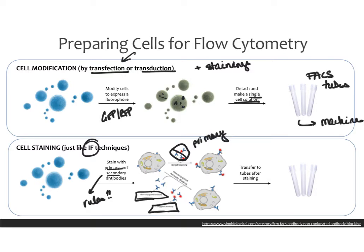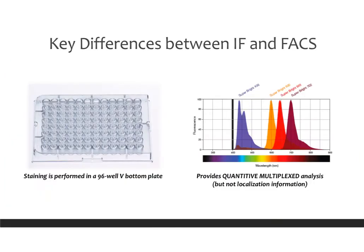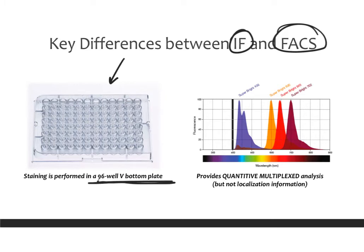Once you've done the staining, you transfer it to tubes and take it to the machine to run and read the results. One key difference between immunofluorescence and FACS is that you can do many, many more samples at the same time. Staining is usually done in a 96-well V-bottom plate, which allows you to constantly spin the cells down and stain them with whatever solution you're interested in. With this, we can do 96 samples, including appropriate controls and triplicates.